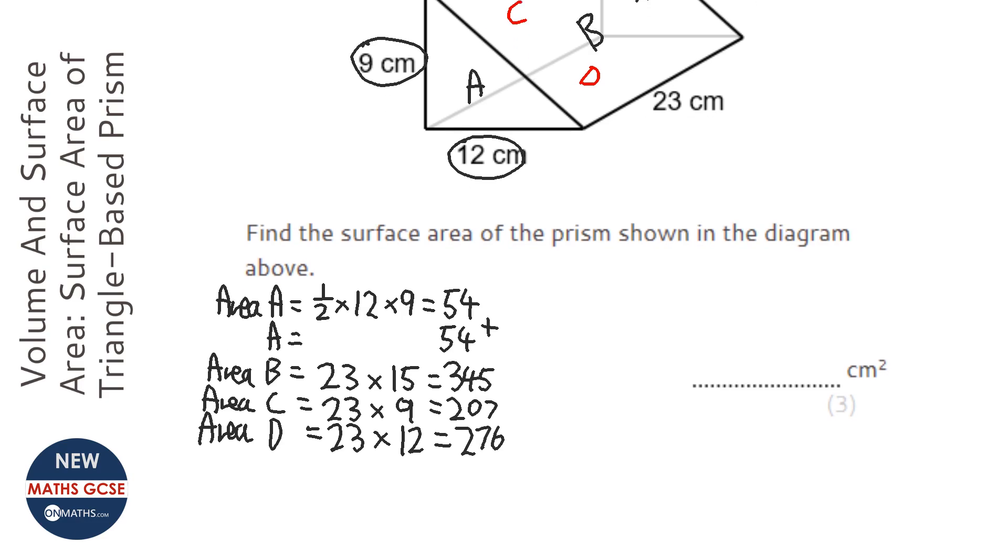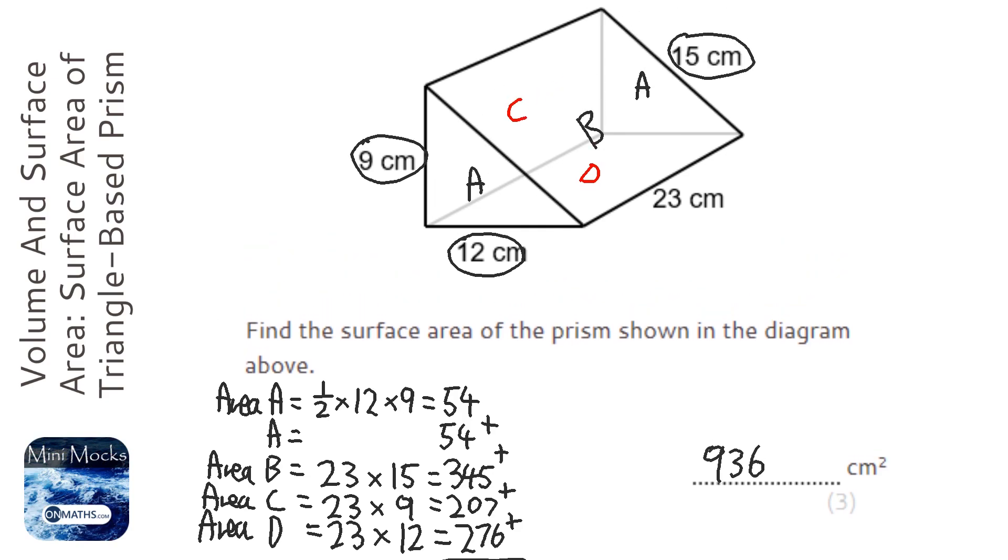Then to work out the surface area, I'll just add all of these together. So 54 plus 54 plus 345 plus 207 plus 276 equals 936. So the surface area is going to be 936 square centimeters.